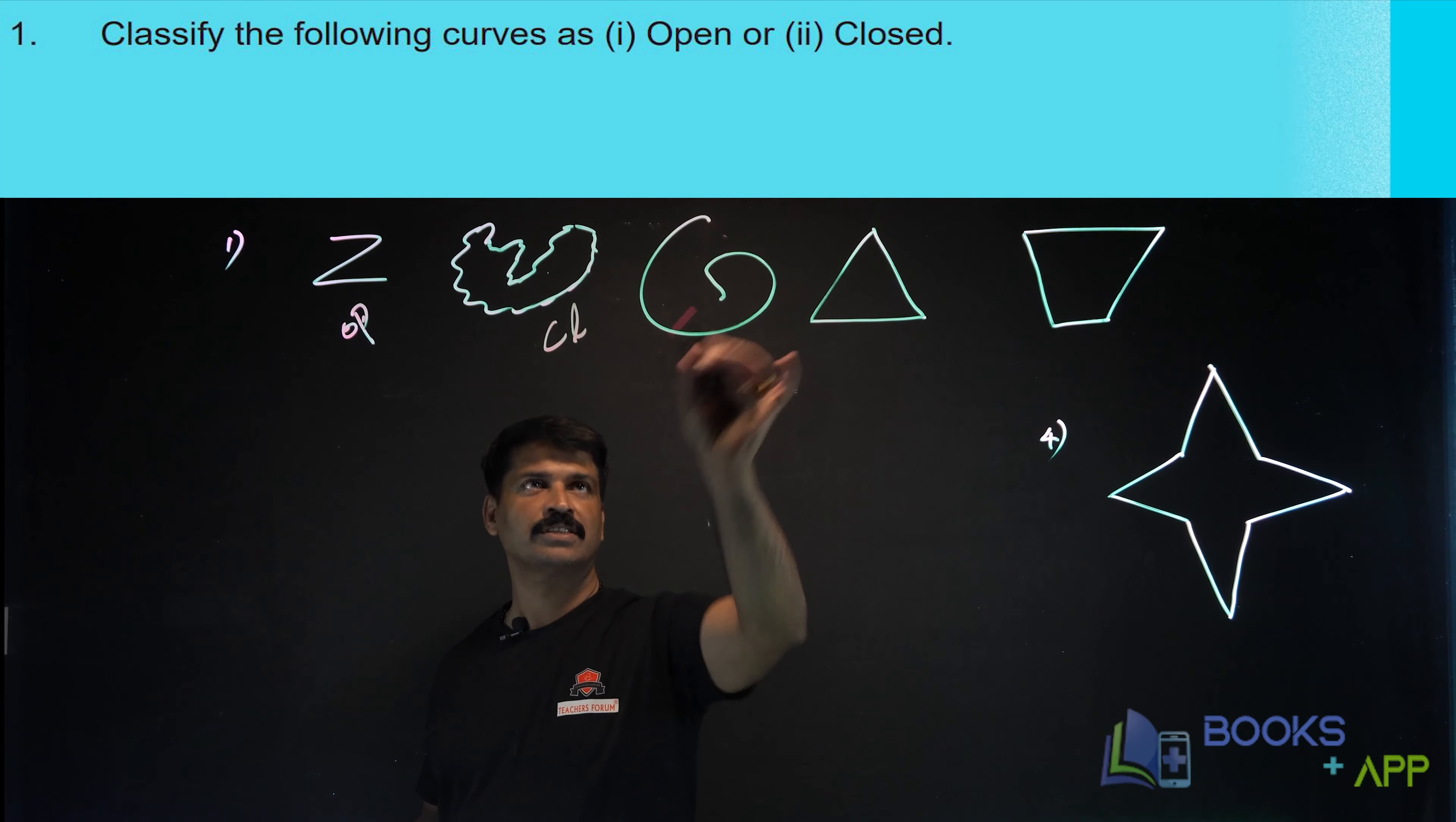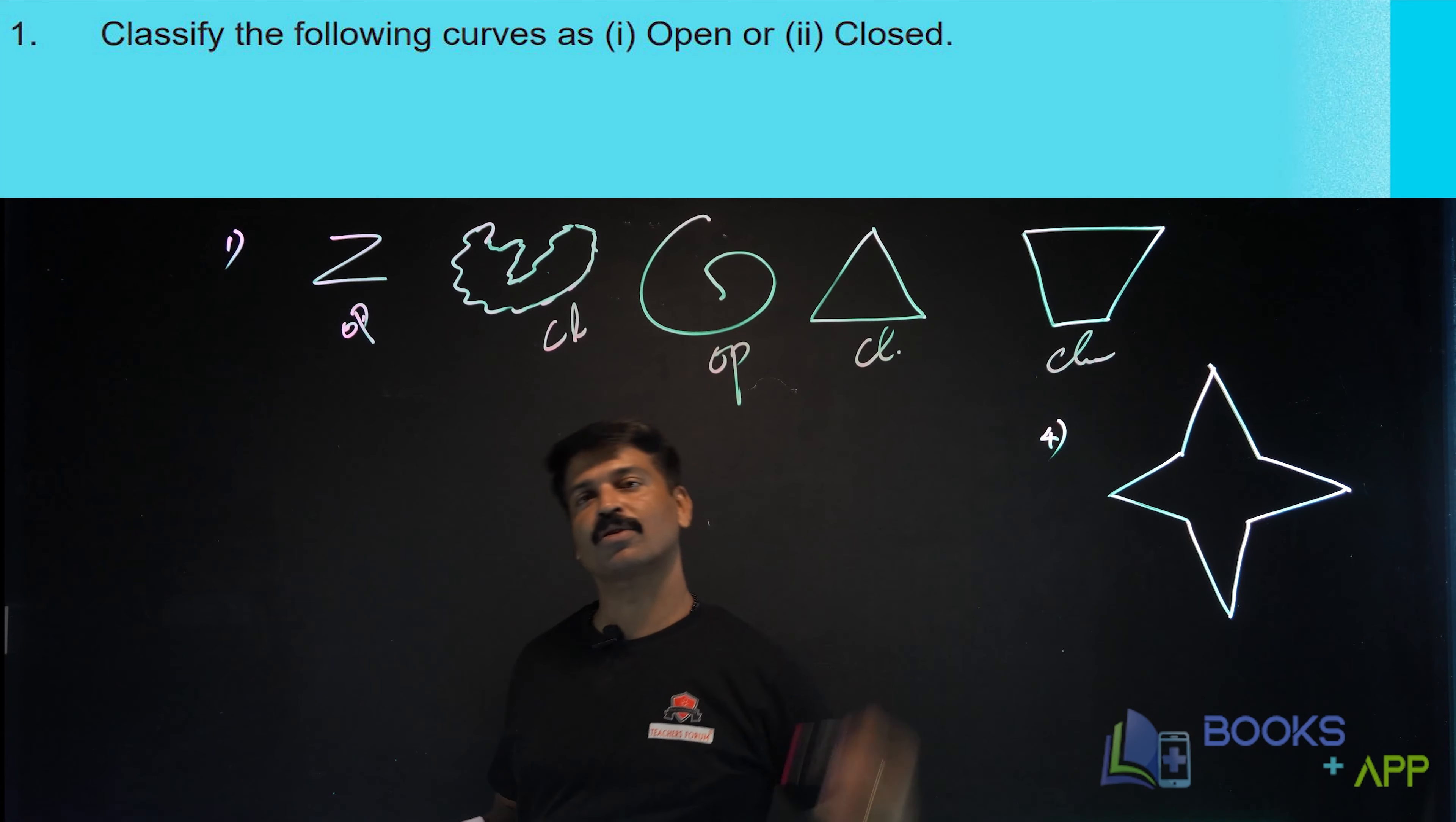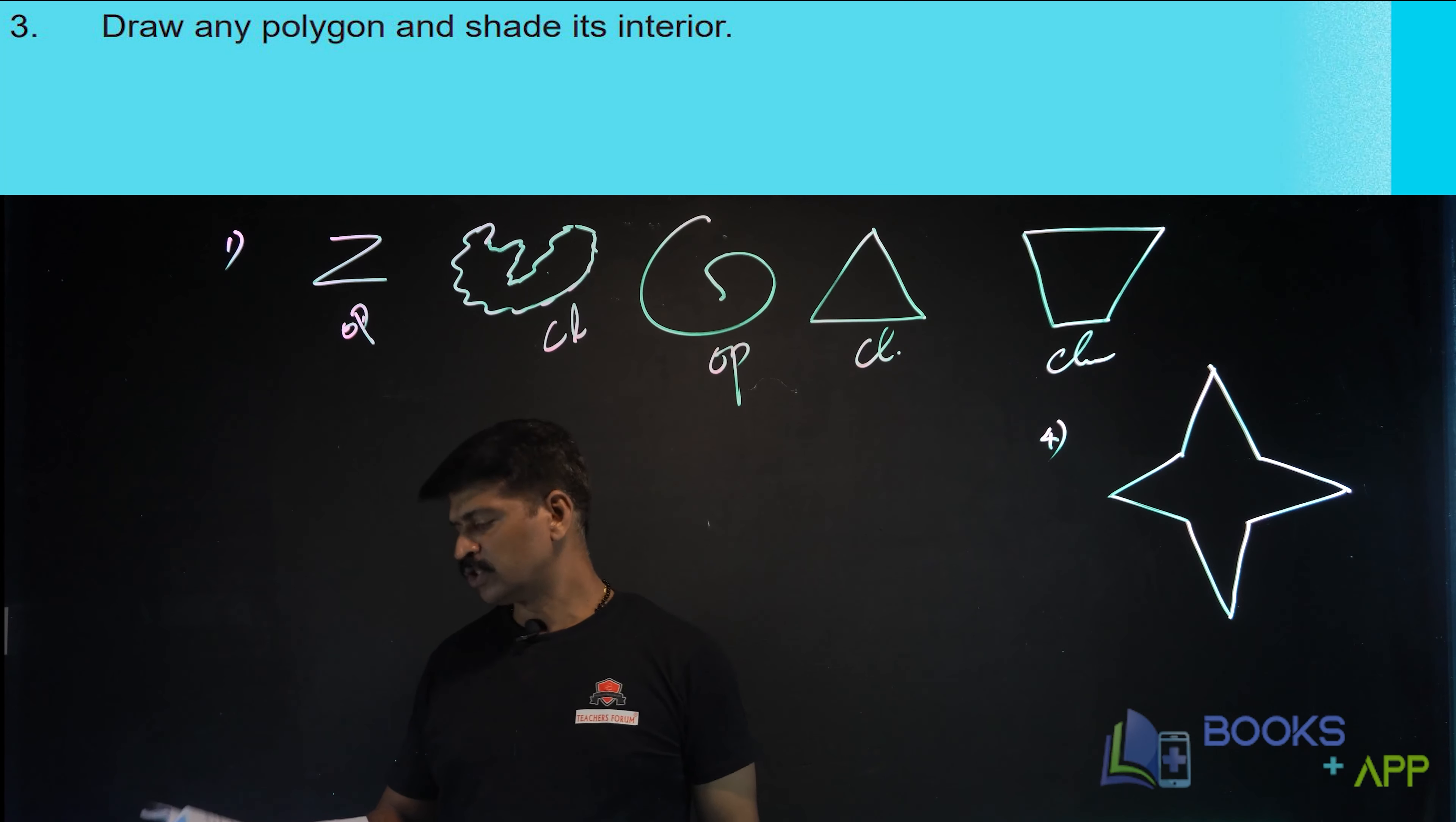What about this? It is open. What about this? It is closed. It is also closed. So this is closed, this is closed, this is closed. These two are open curves. Now question number three: draw any polygon and shade its interior.